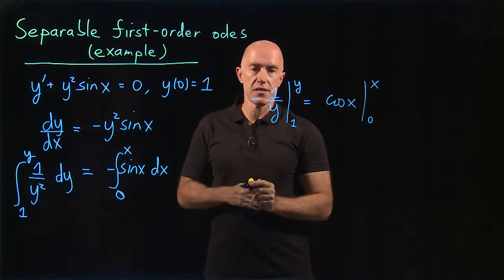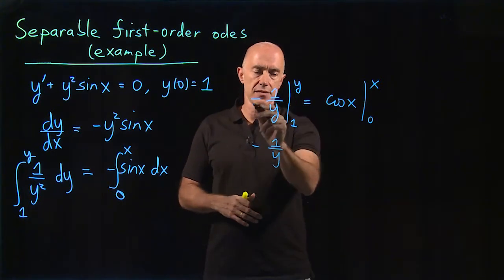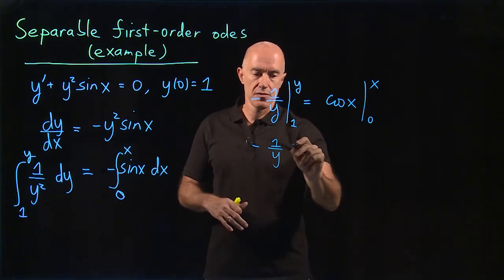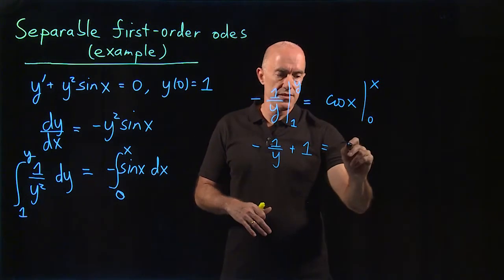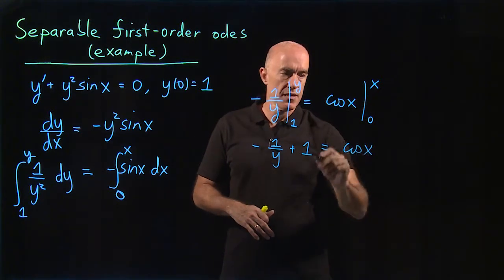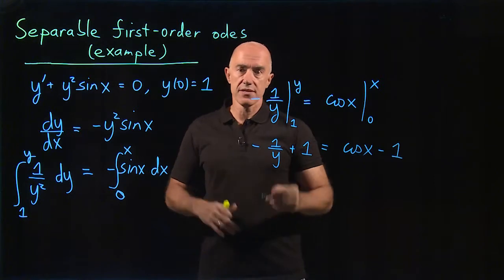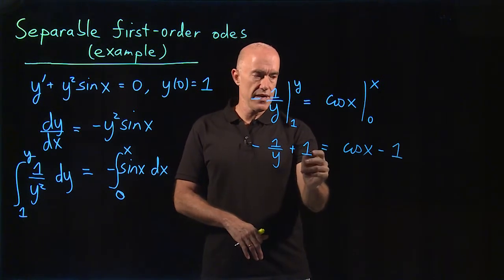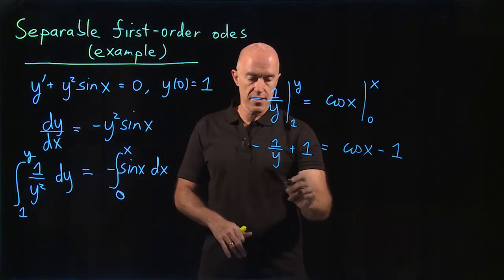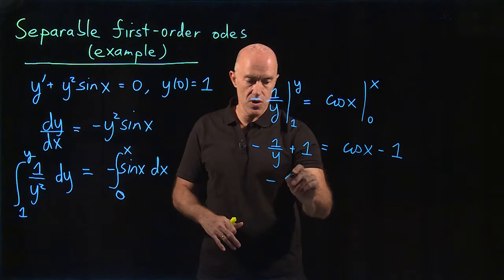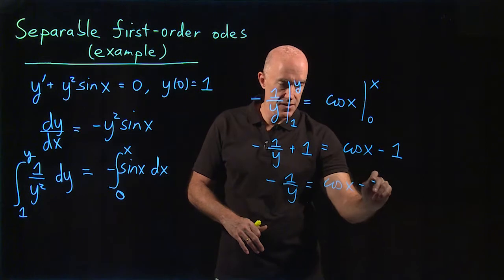We can put in the limits here. We have -1/y - (-1), so plus 1, equals cos(x) - cos(0). Cos(x) minus cos(0) is cos(x) - 1. We want to solve this for y. We have cos(x) - 2, so -1/y = cos(x) - 2.